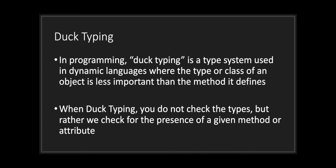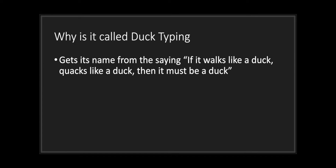Duck typing in programming is a type system used in dynamic languages where the type or class of an object is less important than the methods it defines. When duck typing, you do not check the types but rather check for the presence of a given method or attribute. Duck typing gets its name from the colloquial saying: if it walks like a duck and quacks like a duck, then it must be a duck.